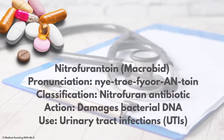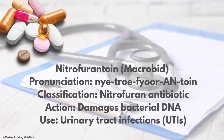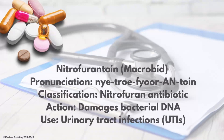Macrobid — the generic is nitrofurantoin. Classification: nitrofurantoin antibiotic. Action: it damages bacterial DNA. Use: urinary tract infections.